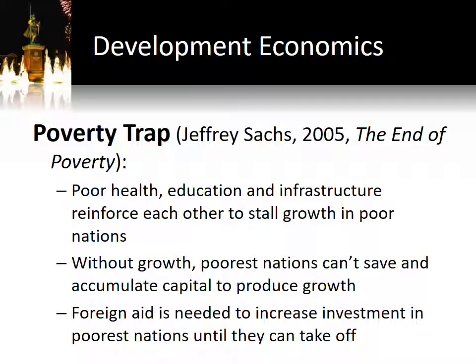Therefore, Sachs argues that foreign aid is needed to increase investment in these poor nations until they take off. That 'takeoff' is a technical term going back to Rostow, who argued that nations have to get out of subsistence farming, reach a certain point of technological development where their markets become efficient enough to employ all aspects of their society — and then they take off and grow at a fast rate. This was real popular in the 60s and 70s, fell out of favor, and Sachs kind of dusted it off, applying it mainly to the poorest of poor nations around the world.